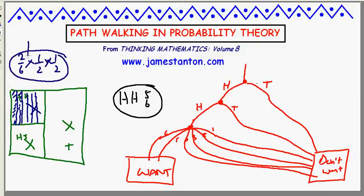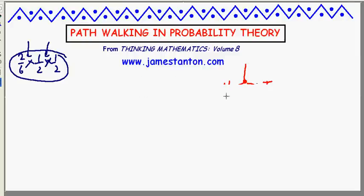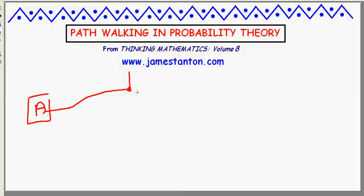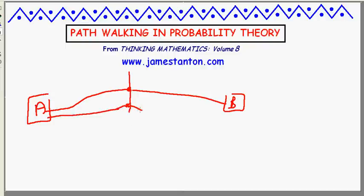So the probability of getting heads and heads and five or six is two sixths of one half of one half. This really explains why multiplication appears - getting heads AND heads AND a five or six. It also explains OR: a five OR a six means adding areas. So in basic probability problems, the word 'or' corresponds to adding areas and 'and' corresponds to fractions of fractions, hence multiplication. Now let me put a twist on all this and do something really funky and fun.